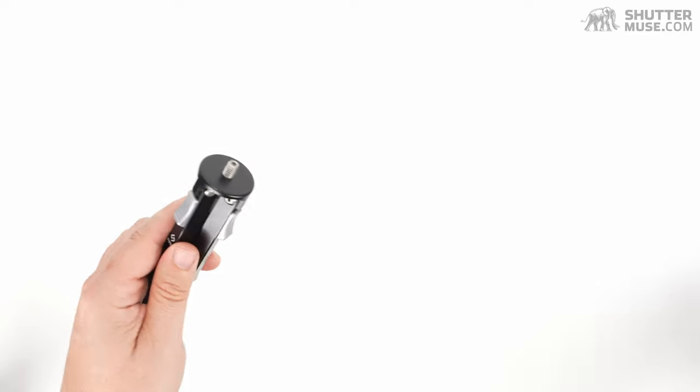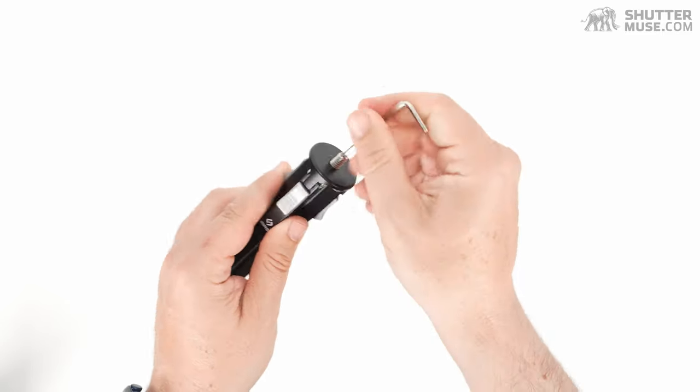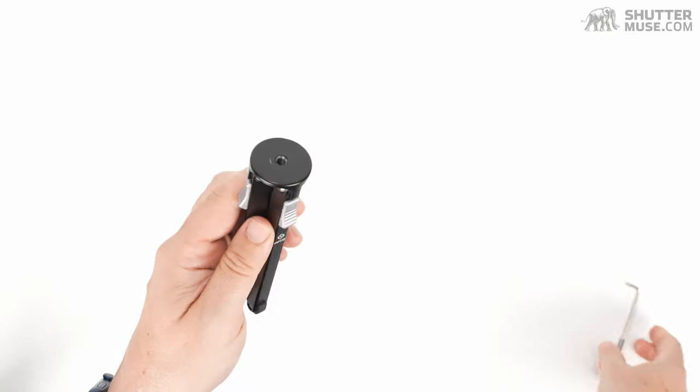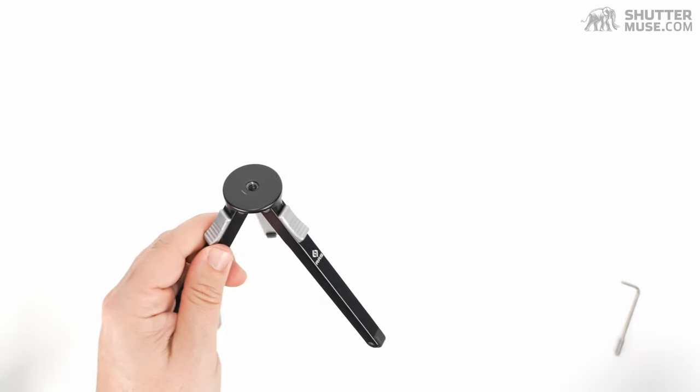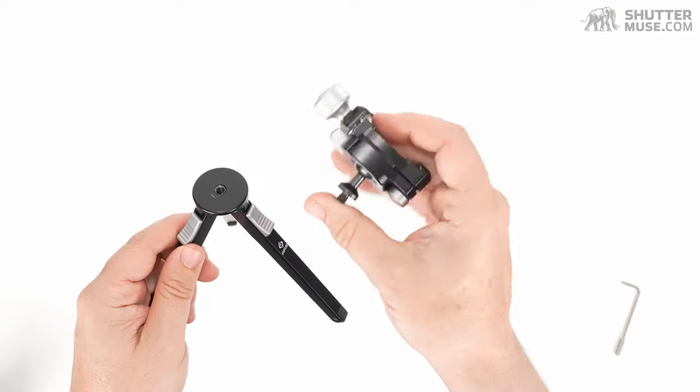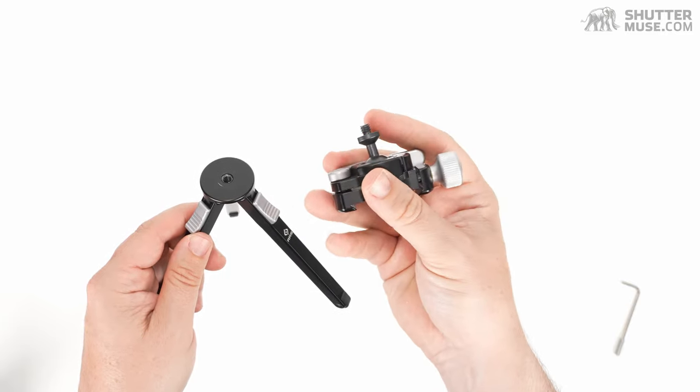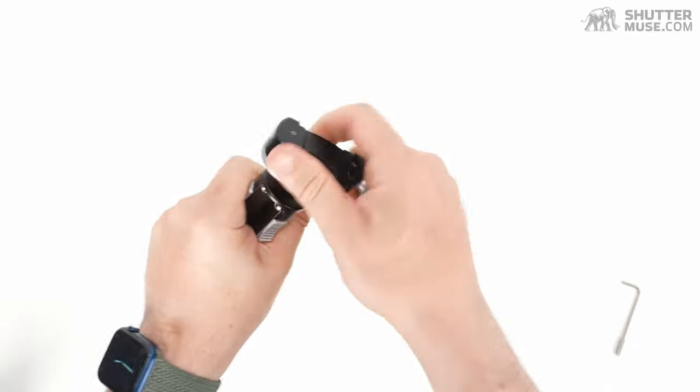Now perhaps an even better solution is to take a hex key and stick it in the top of this stud. We can actually remove the 1/4 stud to reveal a 1/4 hole in the top there. Then we can take one of Really Right Stuff's super cool inverted ball heads. Now this is the BC-18 head. It has a 1/4 stud on the bottom so we can just combine the two together.